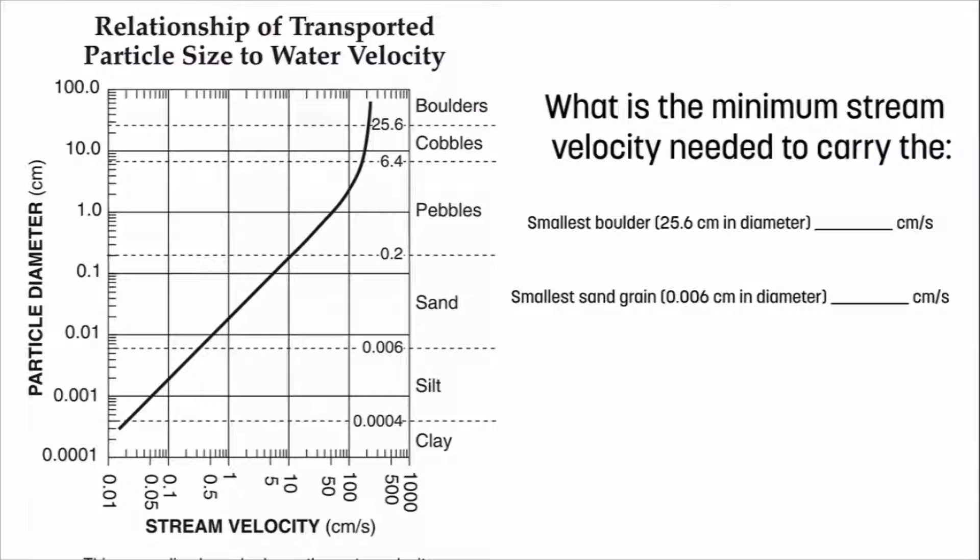What is the minimum stream velocity needed to carry the smallest boulder? Now the smallest boulder is going to be nothing less than 25.6 centimeters. So we know that that's the cutoff. How do we figure out the speed needed to carry a 25.6 centimeter boulder? Well, that black line is there to help us. That black line is representing the speed needed to carry each individual sediment type. And wherever the black line meets a dotted line, horizontal dotted line, that's the speed for that particular sediment. So in this case, where the black line crosses the dotted line is somewhere over here. So take a moment and see if you can calculate the speed needed.